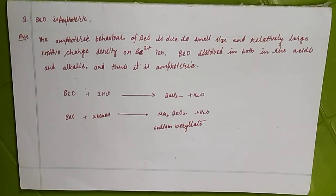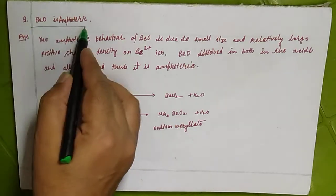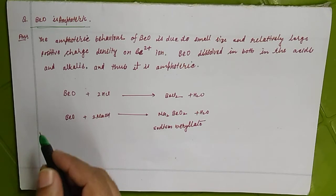Hello, good evening friends. Today I'm going to discuss an important question of the oxide subgroup two elements, that is the alkaline earth metals. The question is: beryllium oxide is amphoteric. Why is beryllium oxide amphoteric?